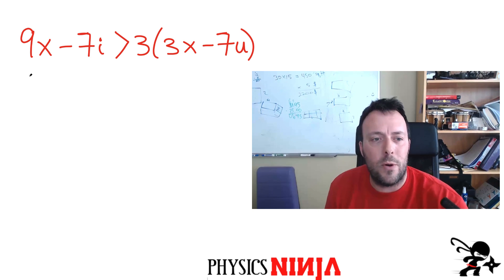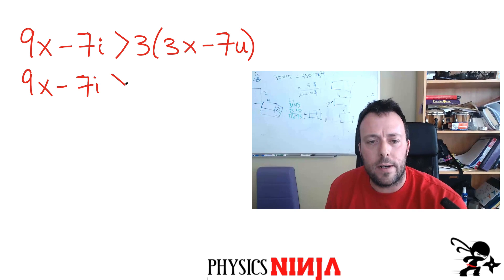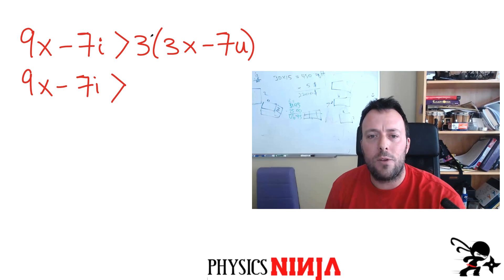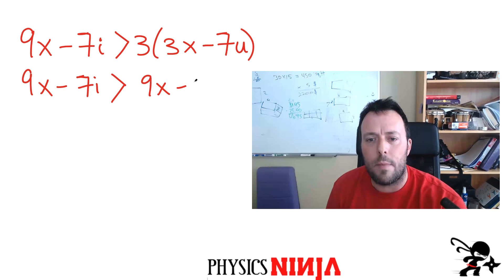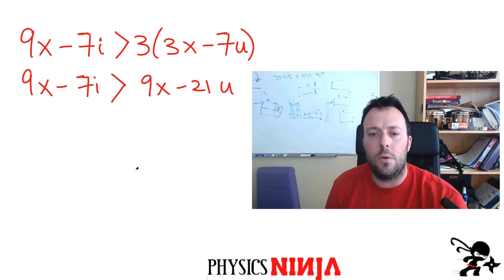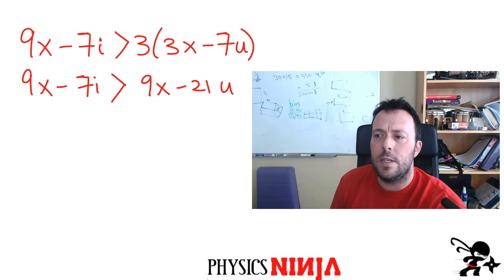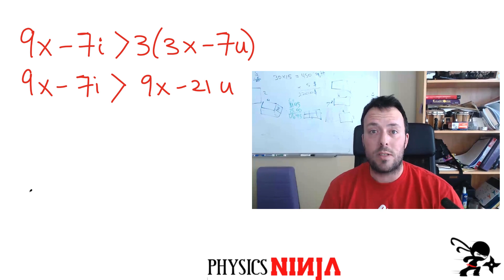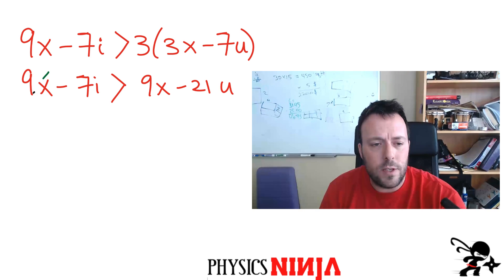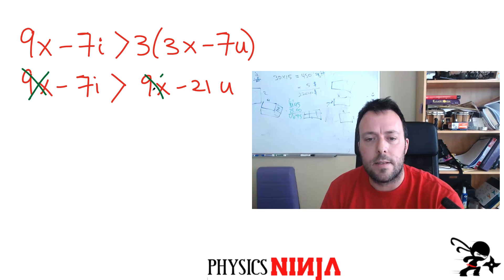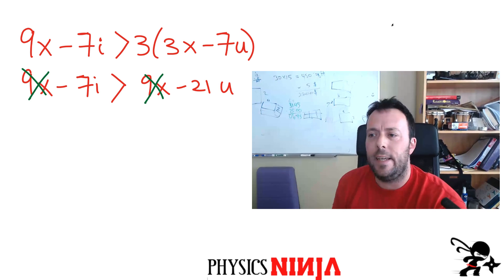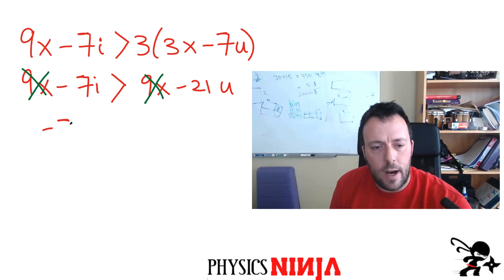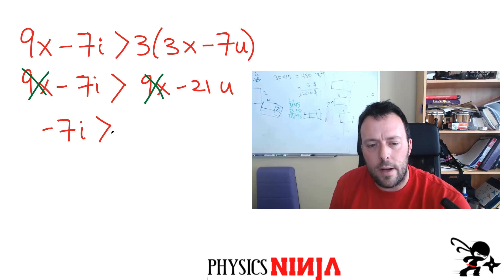We can keep this first term. Let's do a couple steps over here, keep this the same way. Now we'll distribute the three, so we get 9x and minus 21u. One thing we notice is we have 9x's on both sides of the equation. So if we subtract 9x from both sides, that's simply going to leave us with negative 7i is greater than negative 21u.